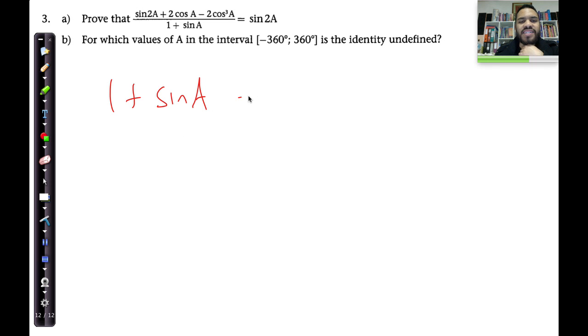When one plus sine A is equal to zero, and I'm going to put there if one plus sine A equates to zero, then this fraction is undefined and this identity would be undefined. So when does this equal zero? Well, this is if sine A is equal to negative one.